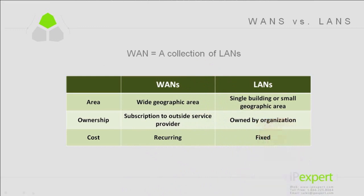Looking at this comparison table, the scope of a WAN is geographic — it can span large distances. A LAN, in contrast, is going to be either in a single building or a small geographic area, what we used to call a campus. We also had a term called a MAN — a metropolitan area network. But LANs are typically much, much smaller in scope.